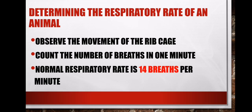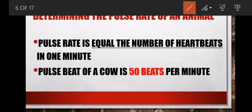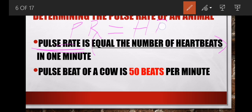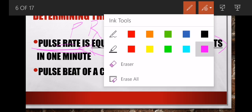Now let's look at the last one: determining the pulse rate of an animal. The first thing you must know is that the pulse rate is equal to the number of heartbeats. The heartbeat is 50 beats per minute, meaning the pulse rate will also have 50 beats per minute. That is how we determine the pulse rate of a healthy animal.